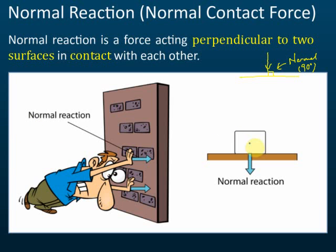Another example: an object resting on a table. The weight of the object presses on the table, so we say this object applies a normal reaction on the table. The normal reaction acts on the table.